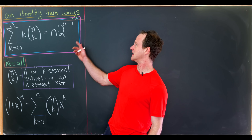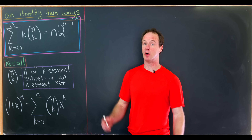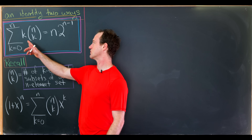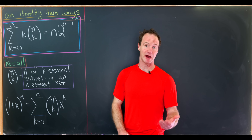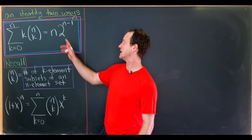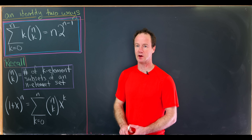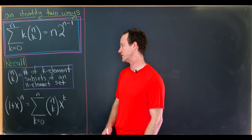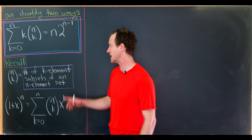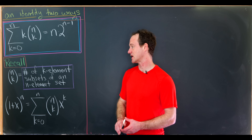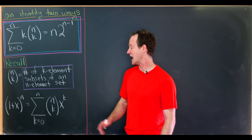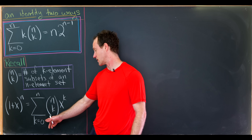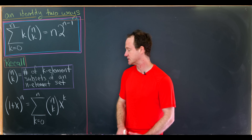So I thought we'd look at the following identity two ways, and then also maybe do a bonus identity at the end. We'll prove that the sum as k goes from 0 to n of k times the binomial coefficient n choose k is equal to n times 2 to the n minus 1. We'll use the following two facts, which are equivalent definitions of binomial coefficients: first, that n choose k is the number of k-element subsets of an n-element set; and second, that 1 plus x to the n expands as the sum as k goes from 0 to n of n choose k times x to the k.